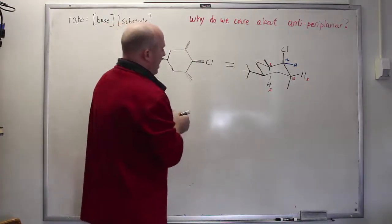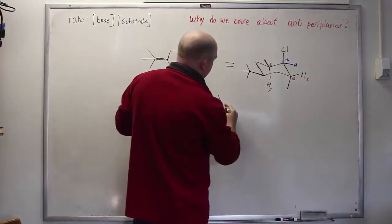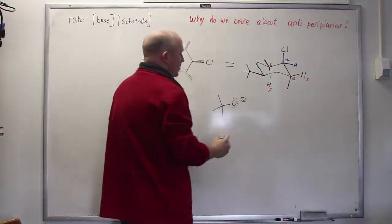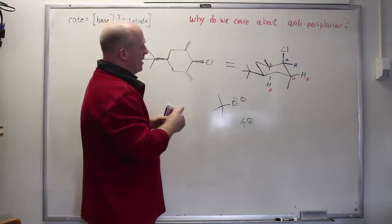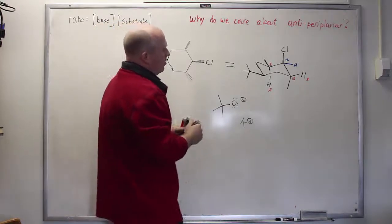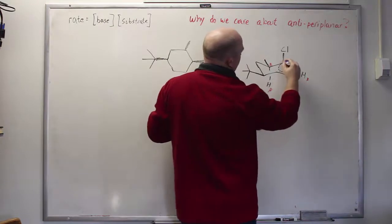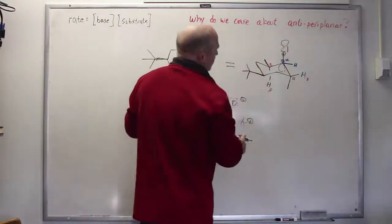So again now we imagine that we have some base floating around. And now let me exaggerate the size and use a relatively large hindered base like say potassium tert-butoxide. This then is going to try to find its way to the sigma star orbital. And of course the sigma star orbital is going to be located on this alpha carbon and is going to be opposite the carbon chlorine bond.